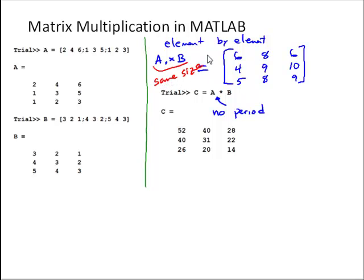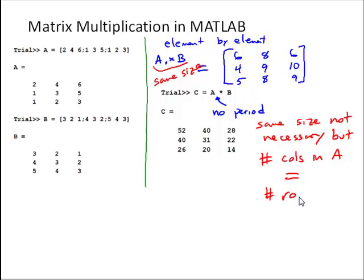For matrix multiplication, we won't use the period, and if you recall from the previous slide, they do not need to be the same size, it is not necessary. But the number of columns in A must equal the number of rows in B in order for this to be defined.